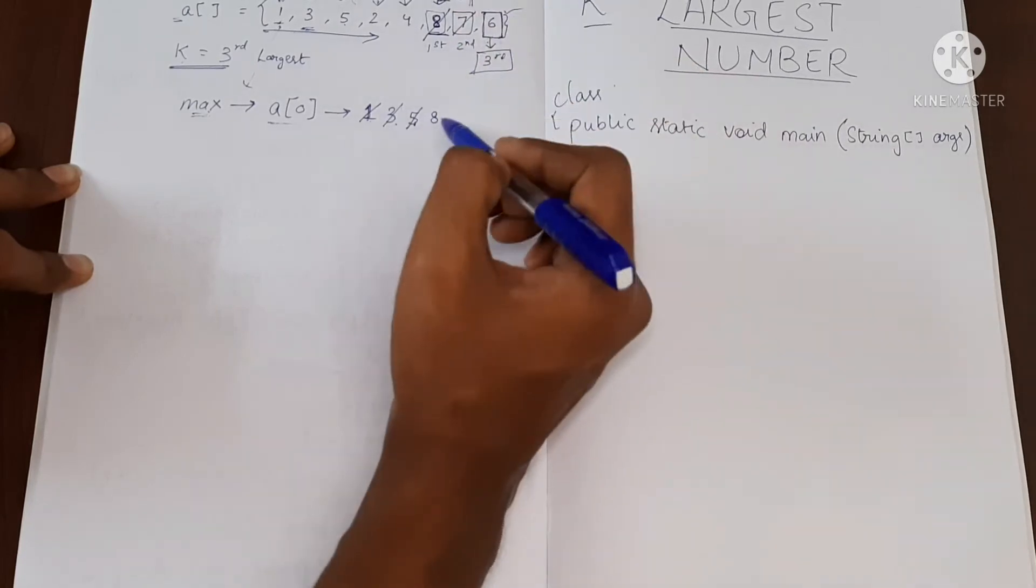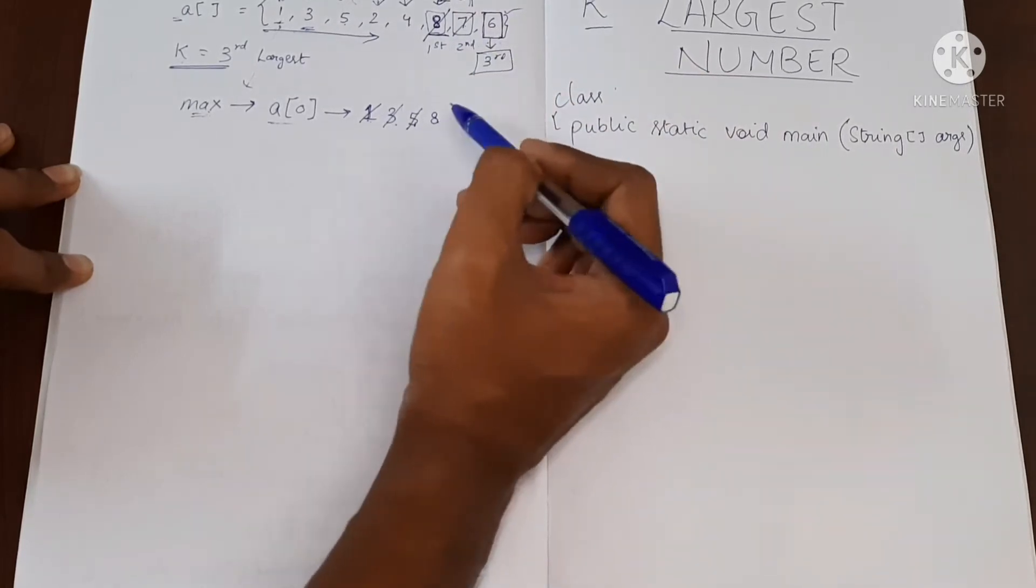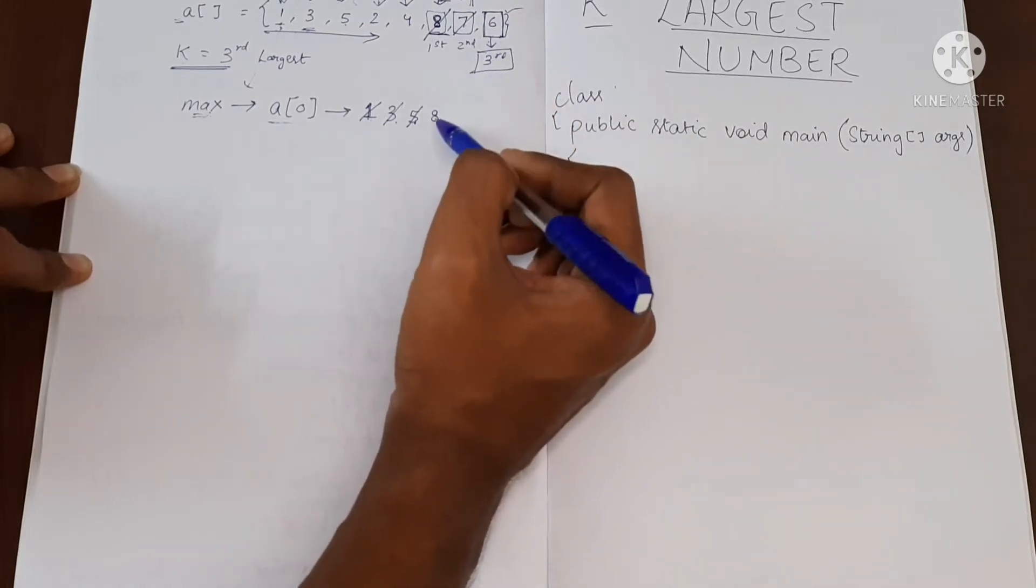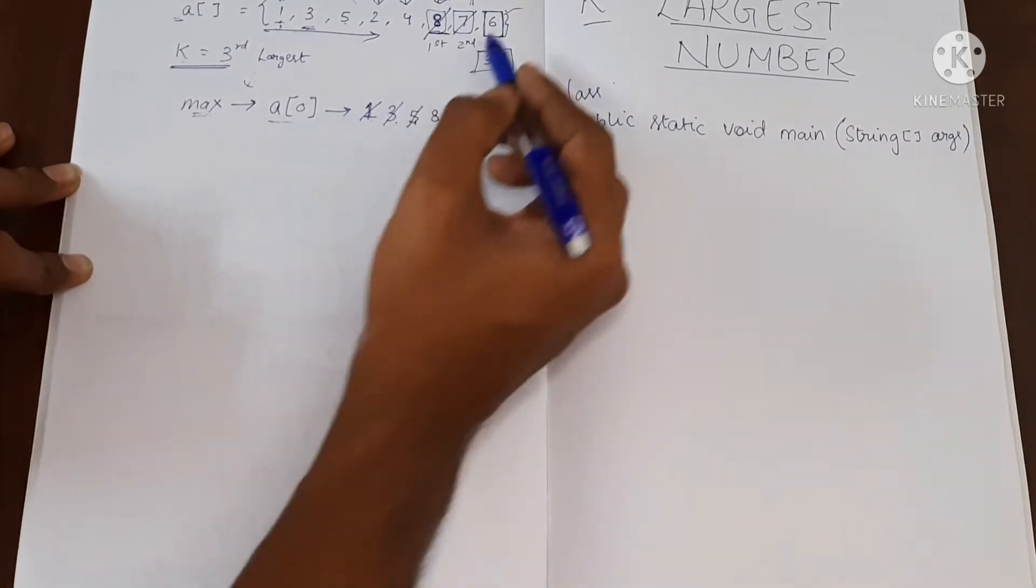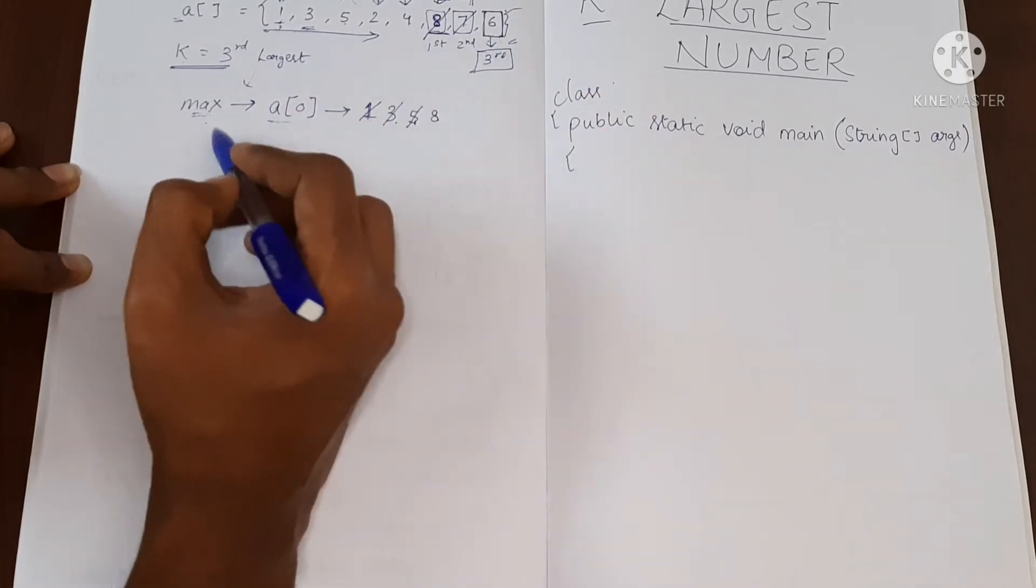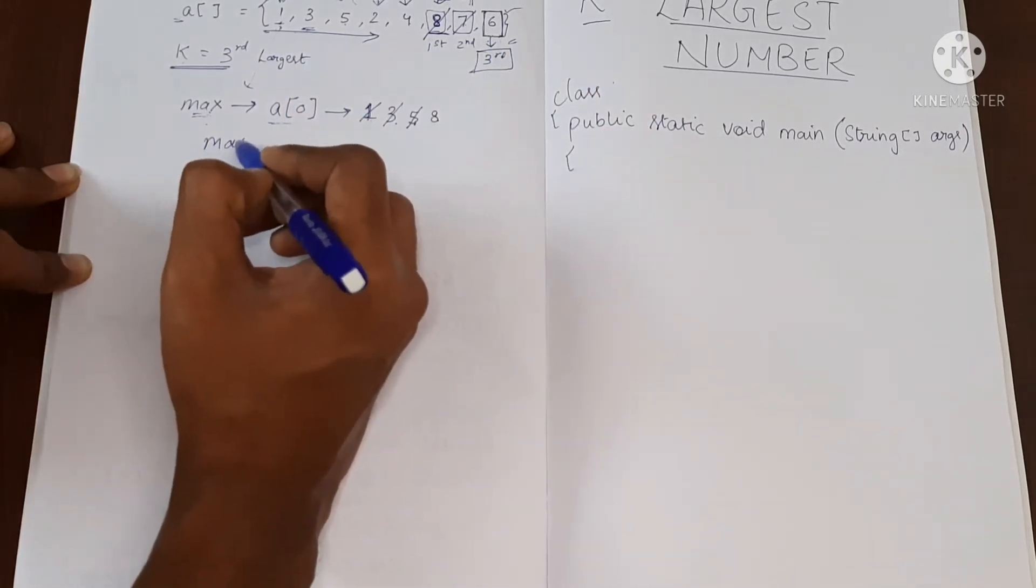Then I move to the next element. I find 7. 7 is smaller than 8, I won't do anything. I'll go to the next element. I find 6. 6 is again smaller than 8. So finally when the iteration is over our max is 8.